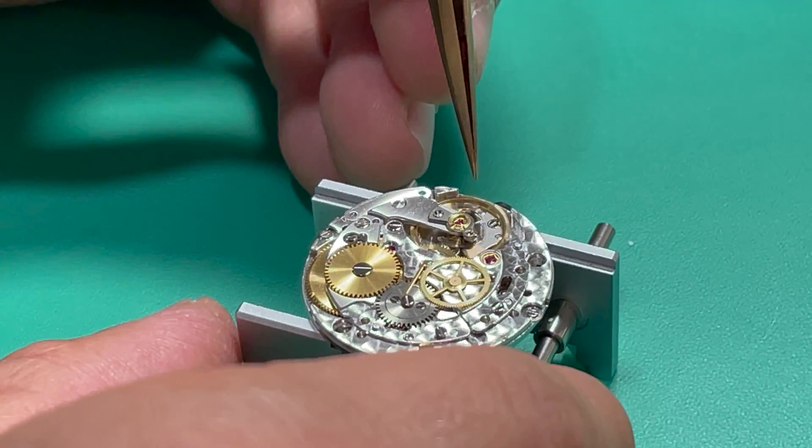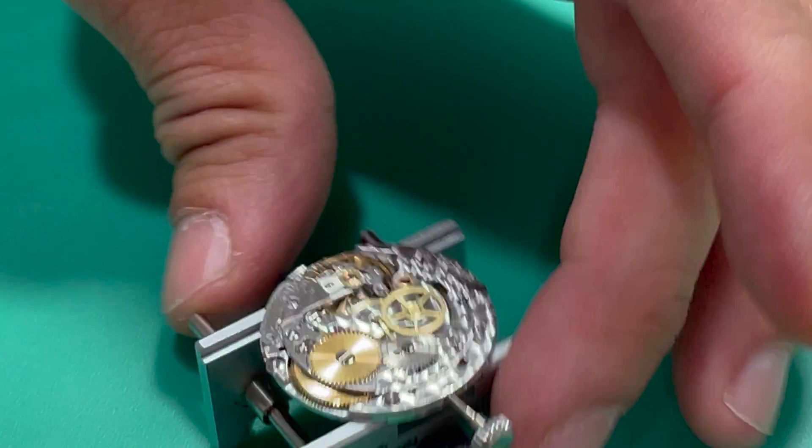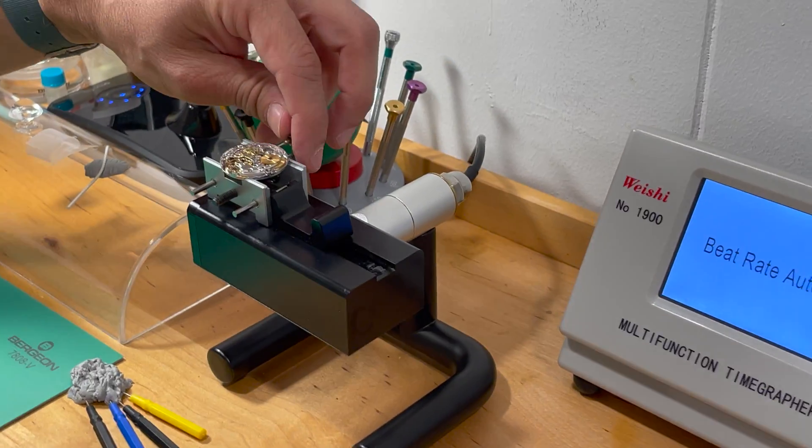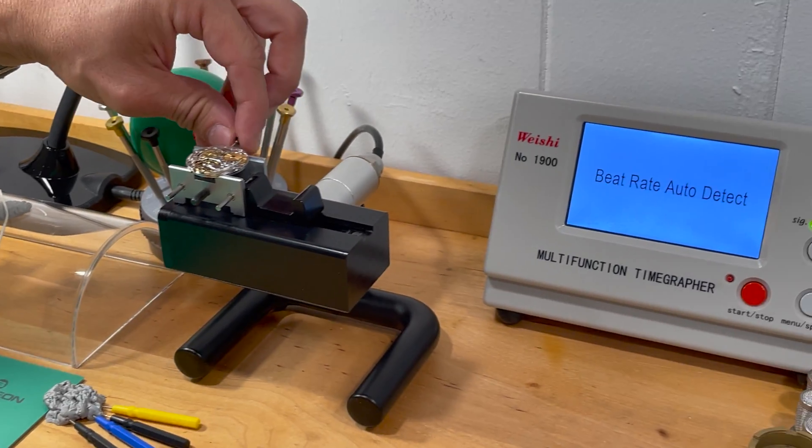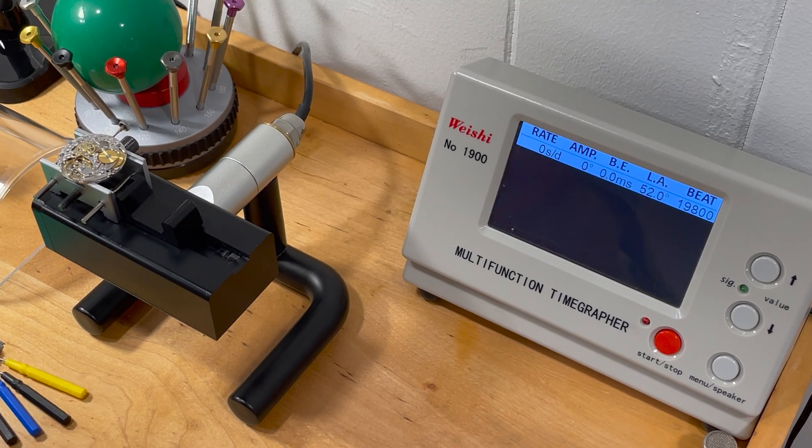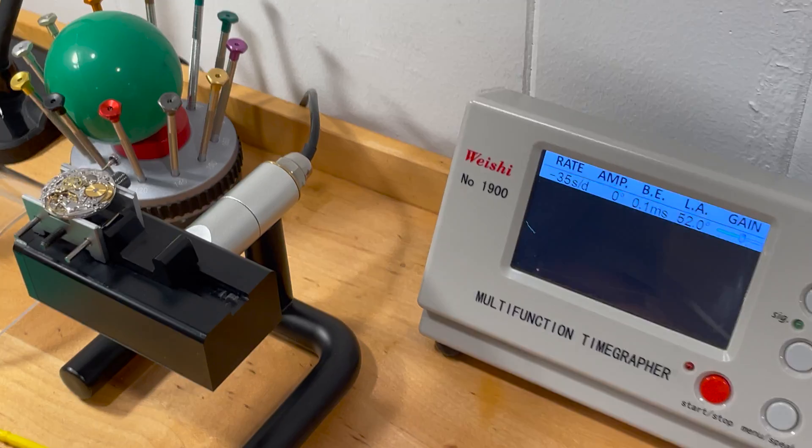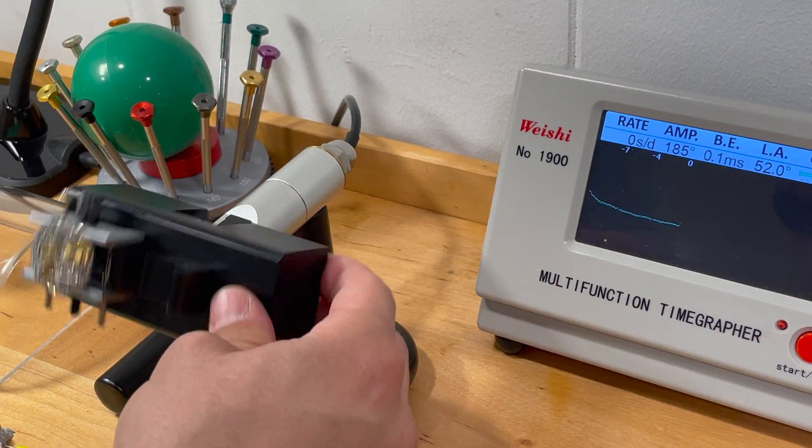I'm just taking power out of the mainspring now. Now what I'm going to do is put it back on our time grapher and apply power to the mainspring just enough.